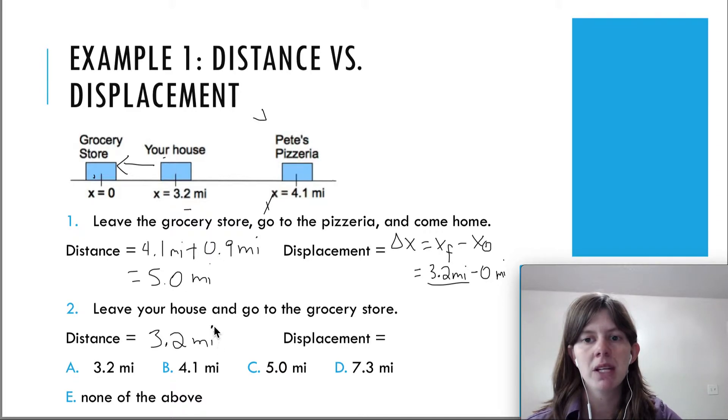But now what about the displacement? You might think, 'Oh, well, that's also 3.2 miles because we still went from the house to the grocery store.' That's the initial position as the final position. But remember that you went to the left, and a displacement to the left is going to be negative.